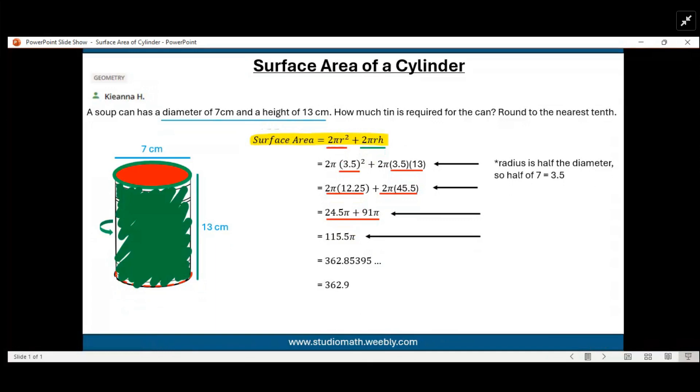Now, the question said to round to the nearest tenth, which means we actually need to multiply the π with the 115.5, and hence we'll get 362.85395 and so on. Then, because we are rounding to the nearest tenth, we will round the number to 362.9.